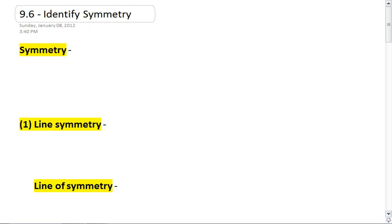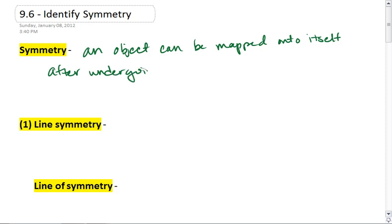Section 9.6, Identify Symmetry. First thing we need to define is symmetry. An object has symmetry, or symmetry is when an object can be mapped onto itself after undergoing a transformation that is not an identity transformation.